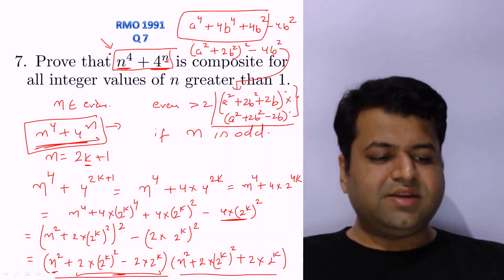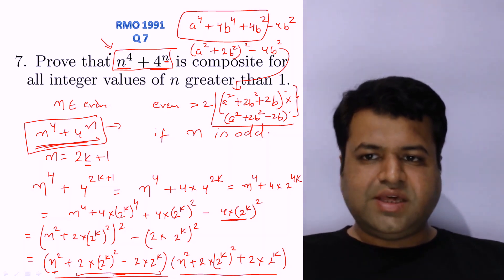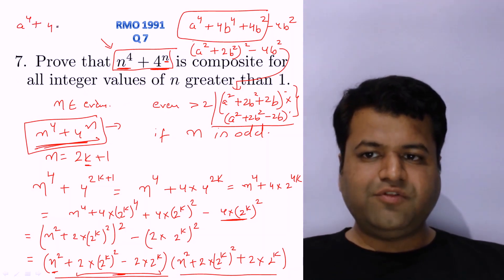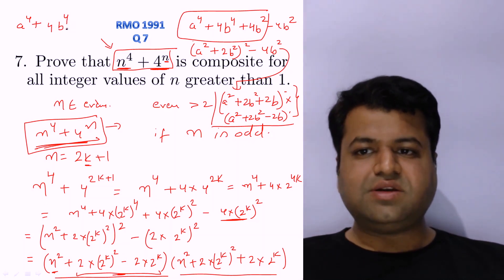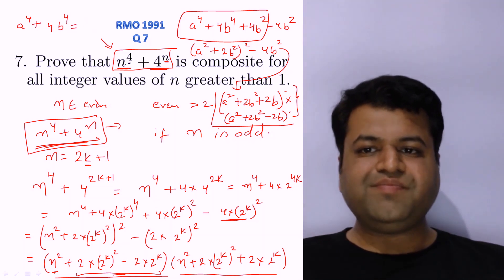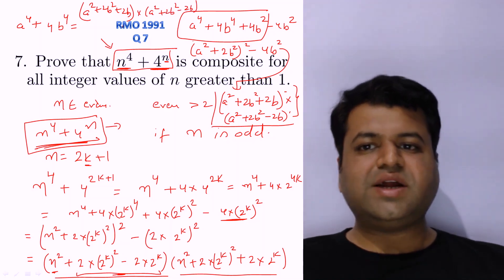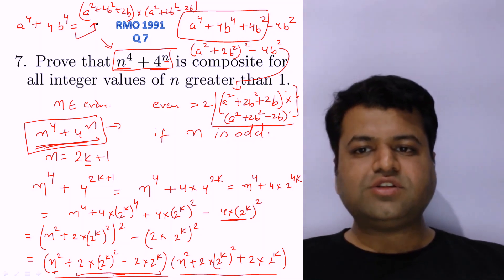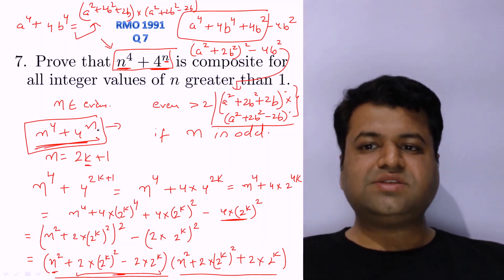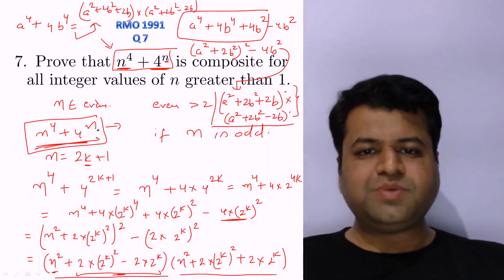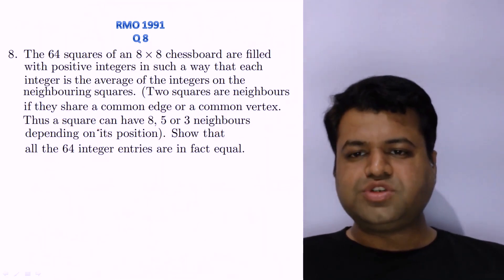To summarize question seven, the key identity to know is: a⁴ + 4b⁴ = (a² + 2b² + 2b)(a² + 2b² − 2b). Those who do not know this identity should memorize this result. It's a very commonly used factorization. With that, let's move to question number eight.